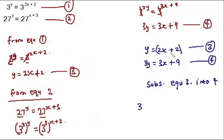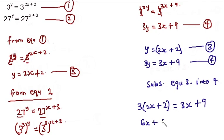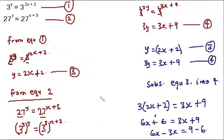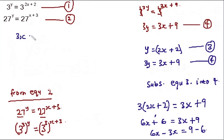Substituting y = 2x + 2 into equation four: 3(2x + 2) = 3x + 9, which gives 6x + 6 = 3x + 9. Collecting like terms: 6x − 3x = 9 − 6, so 3x = 3. Dividing both sides by 3, x = 1.